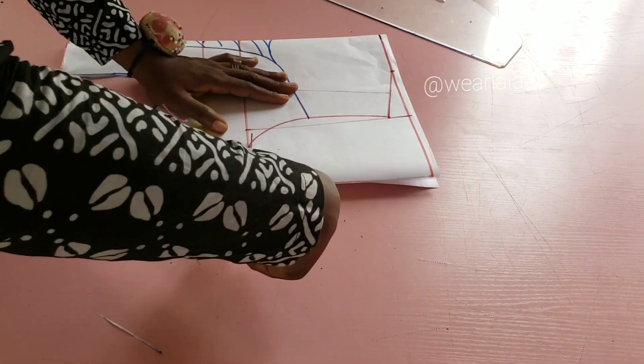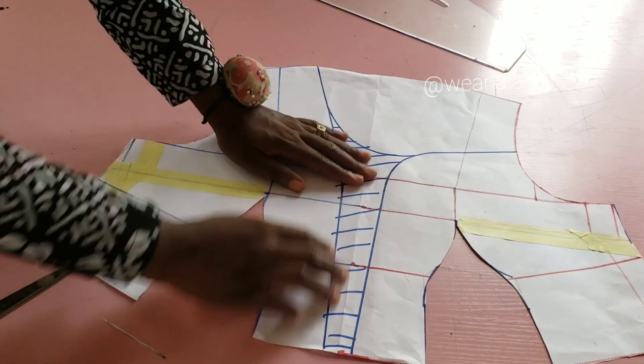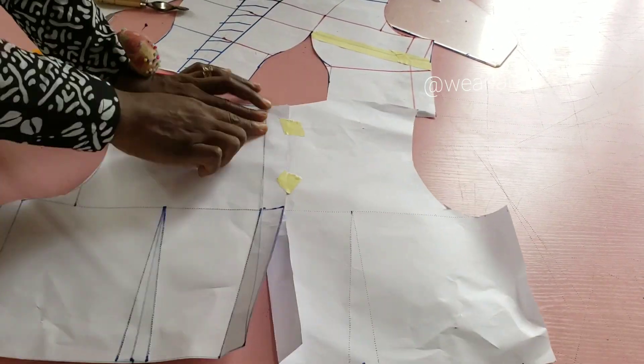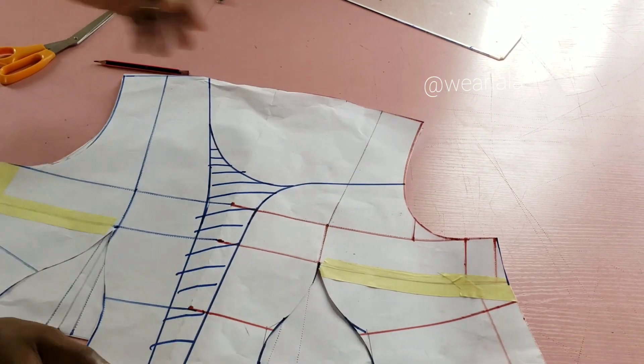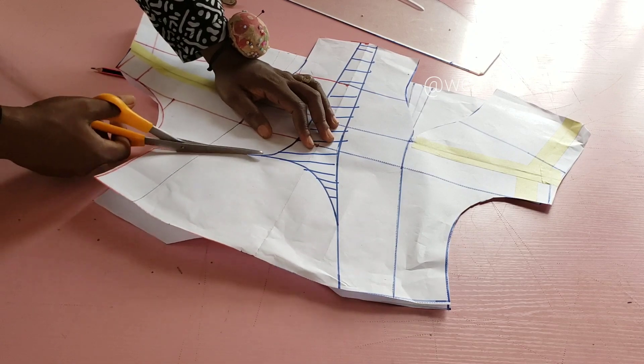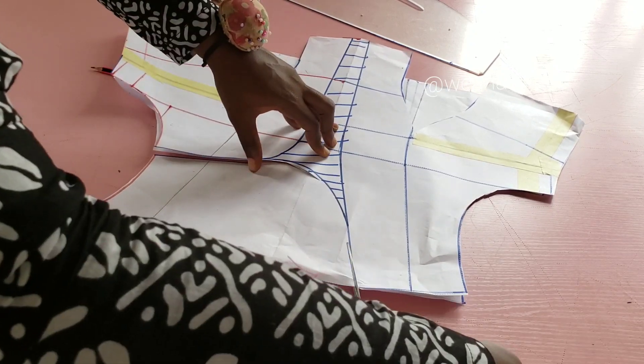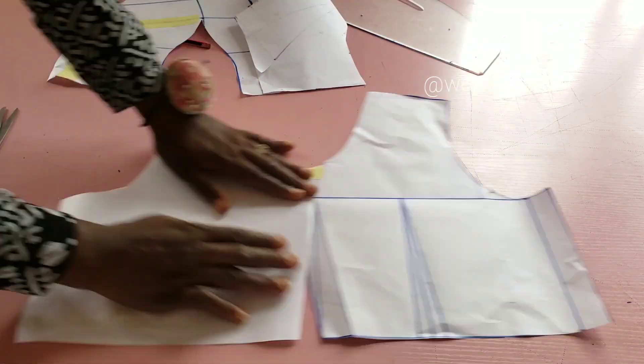Now we still need to do one more thing for the off-shoulder part—we need to blend. But before we do that, we'll use the front pattern to cut out the back since the front and back are asymmetric in nature. That's what I'm doing. I've already cut out my back pattern.